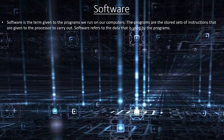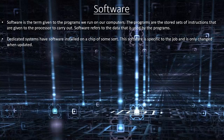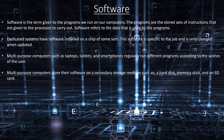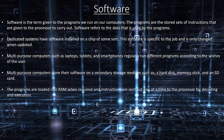Software is a term given to the programs we run on our computers. The programs are stored sets of instructions that are given to the processor to carry out. Software also refers to the data that is used by the program. Dedicated systems have software installed on a chip; this software is specific to the job and is only changed when updated. Multi-purpose computers such as laptops, tablets and smartphones store their software on secondary storage such as a hard disk, memory stick or SD card. Programs are loaded into RAM when required and instructions are sent to the processor for decoding and execution.